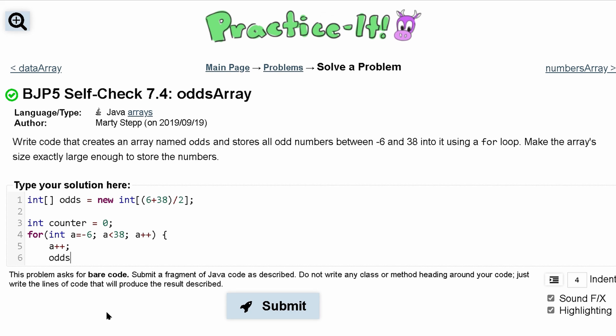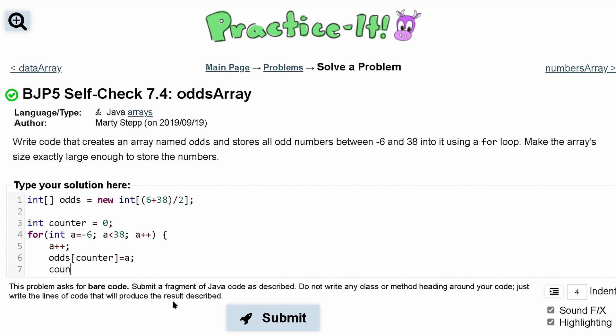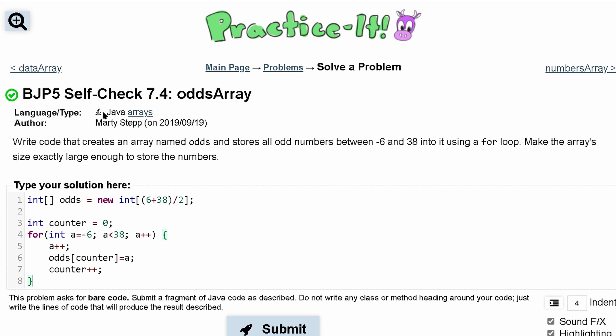We'll have odds, and then we're going to have our counter, which is just going to describe what index we're at, and we're going to set it equal to a. We're going to also want to increment our counter when this is done every single time, and we're going to just end our for loop like that. So let's go ahead and submit this.